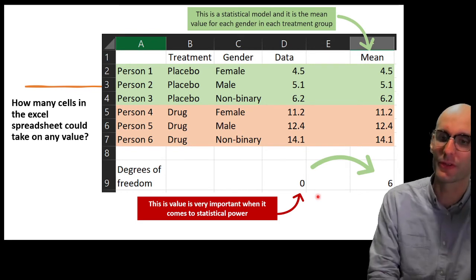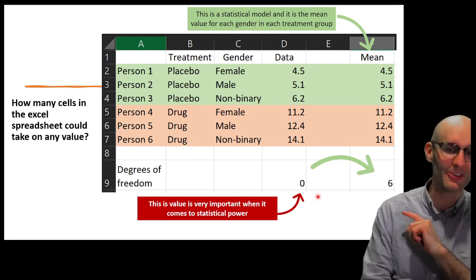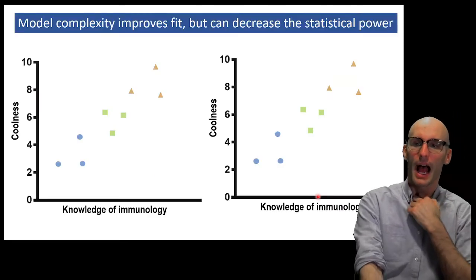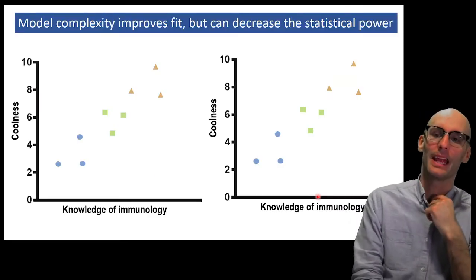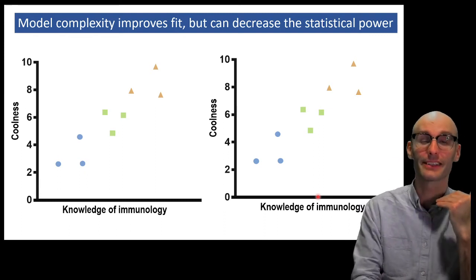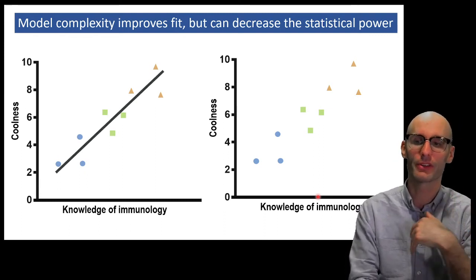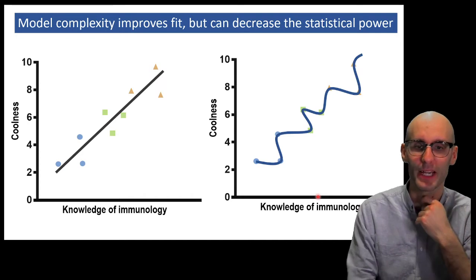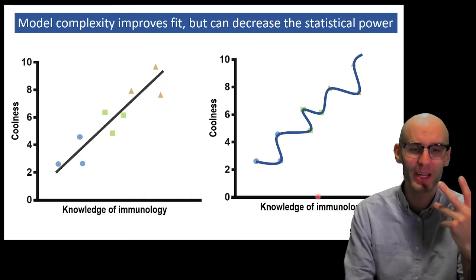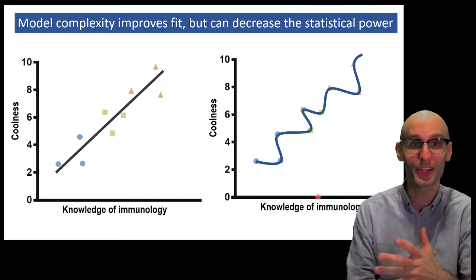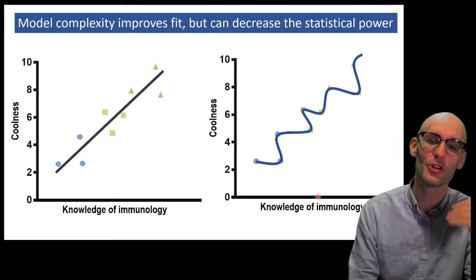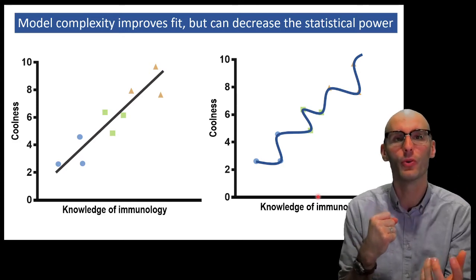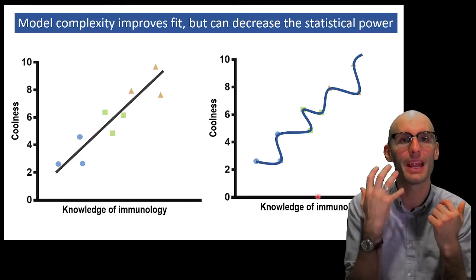This value is very important when it comes to statistical power. If it's zero, you have zero statistical power in this test. We can see that model complexity could improve fit, but it will decrease statistical power because there are no degrees of freedom. In this simple model we haven't used up many degrees of freedom. In this incredibly complicated model we've used up all the degrees of freedom of the data, so it's not a powerful test. Even though it's explained lots of variation, it hasn't explained data that was free to vary.